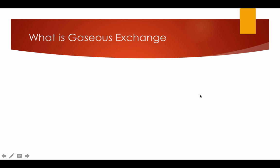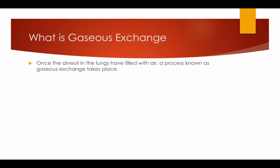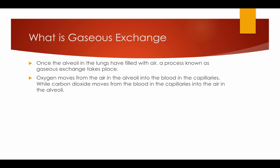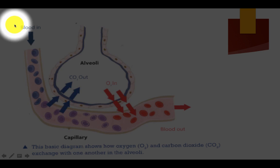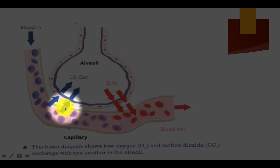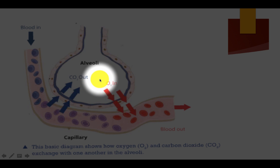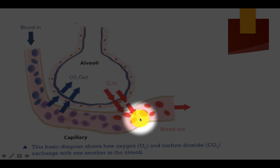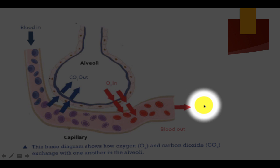Gaseous exchange. What is gaseous exchange? Once the alveoli in the lungs have filled with air, a process known as gaseous exchange takes place. Oxygen moves from the air in the alveoli into the blood in the capillaries, while carbon dioxide moves from the blood in the capillaries into the air in the alveoli. As you can see here, the blood is filled with carbon dioxide as it's come away from the working muscles. It comes down to the alveoli, diffuses through the capillary and goes back out into the lungs.